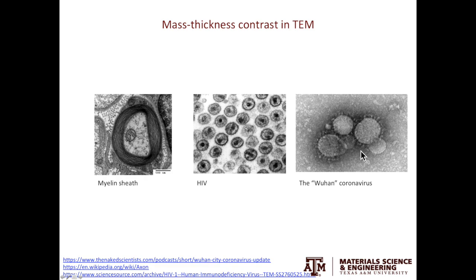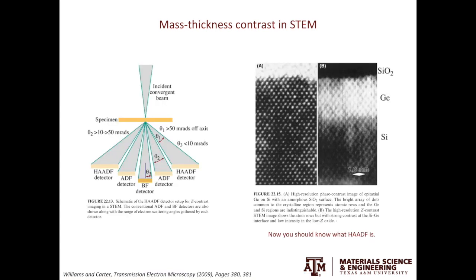In fact, knowledge of the structures of cell organelles and viruses is closely related to the design and development of TEM. In scanning transmission electron microscopy, STEM, we can also get contrast from mass and thickness differences. There are different sets of detectors: the bright field detector, the annular dark field detector, and the high angle annular dark field detector — also called HAADF. Because the HAADF detector collects electrons scattered at very large angles, that gives you mass thickness contrast.